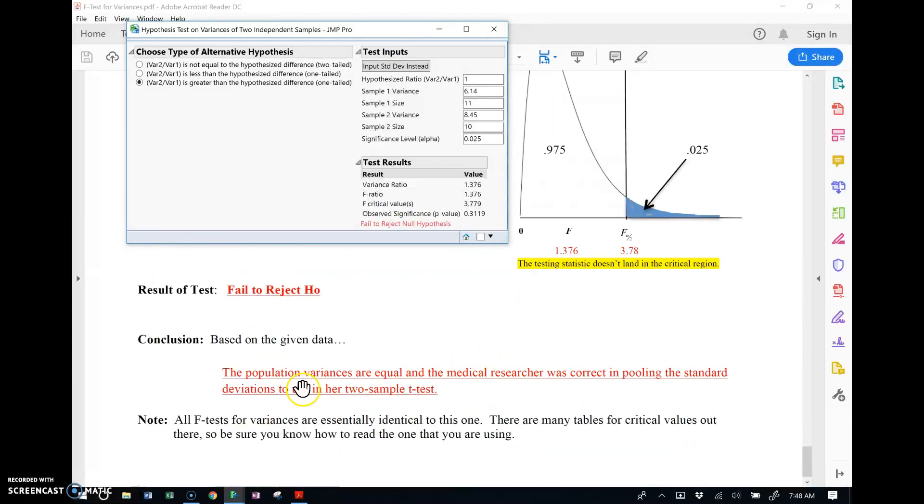Alright, so in other words, the population variances are in fact equal and the medical researcher was correct in pooling the standard deviations to use our two-sample t-test.